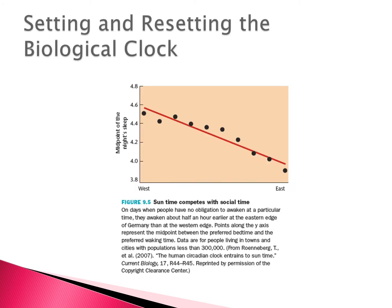We can see clear effects of how light affects us as a zeitgeber. This study was done in Germany, where the y-axis shows the midpoint of sleep. All of Germany is in a single time zone, but in the west the sun comes up and goes down later than in the east. When people are allowed to sleep and wake when they want, their sleep midpoint gets earlier and earlier as you move east, where the sun rises and sets earlier.